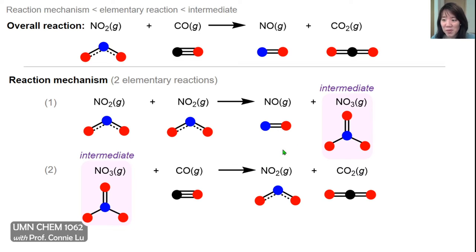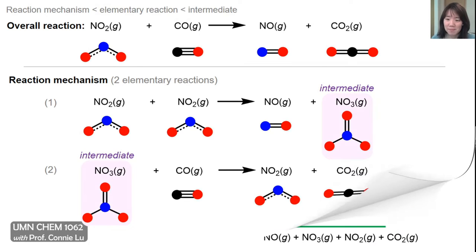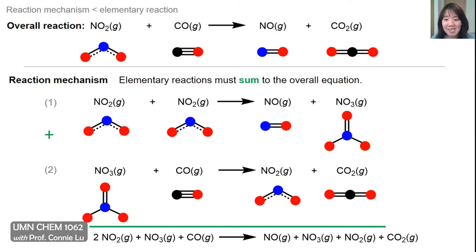In this mechanistic proposal, the nitrate radical is called an intermediate. An intermediate is neither reactant nor product. The intermediate is generated in the first step and then consumed in the second step. Because it's formed and consumed, it cancels out overall and doesn't appear in the overall chemical equation. One important rule about reaction mechanisms is that they must sum to the overall chemical reaction. So these two elementary steps, when summed, should give you the same overall chemical reaction.